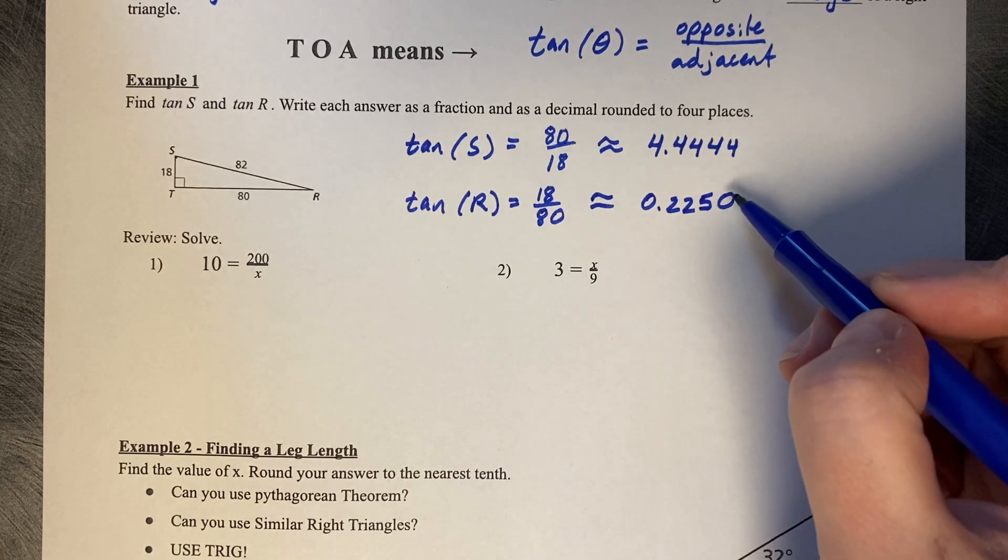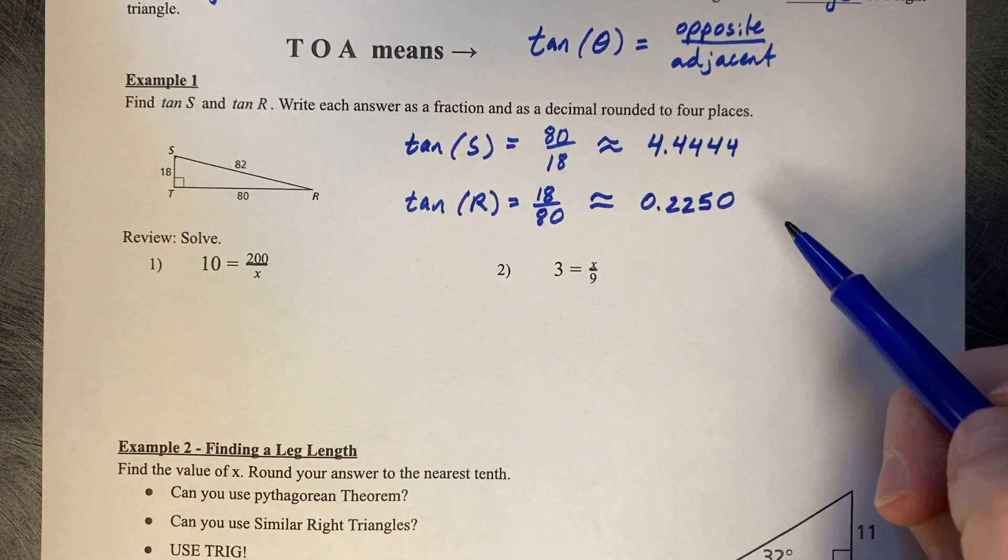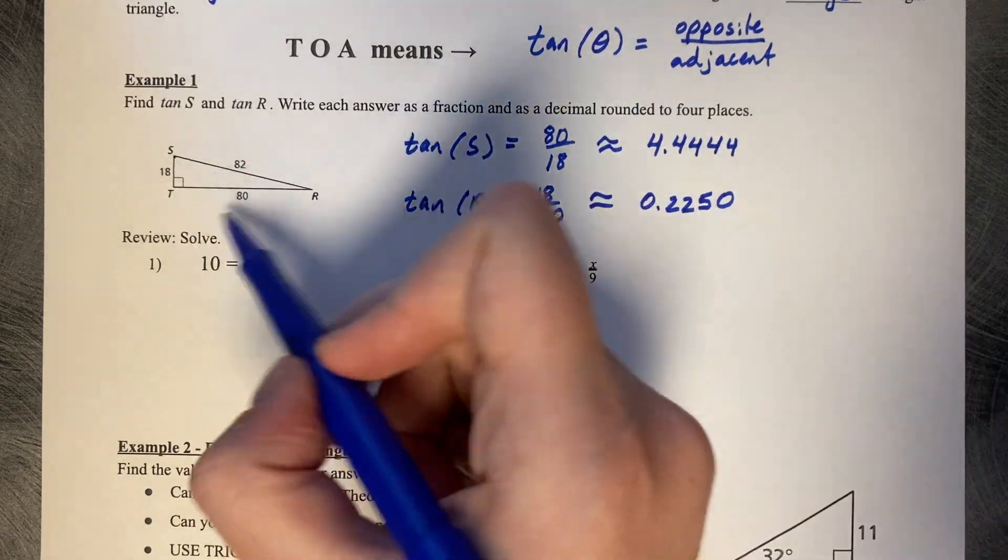These two numbers represent the ratio of the opposite to adjacent side lengths in this triangle.